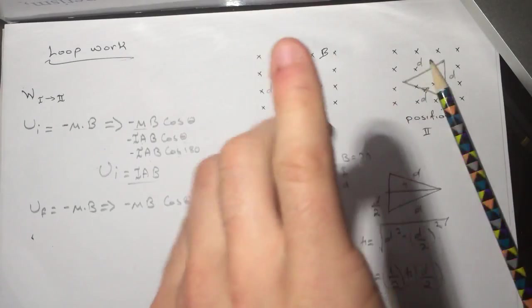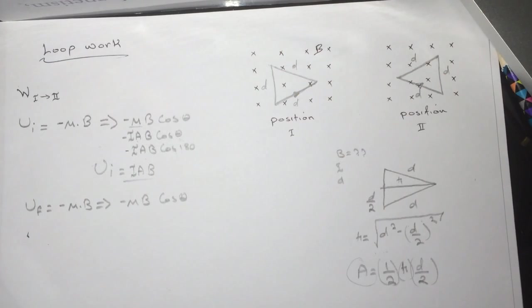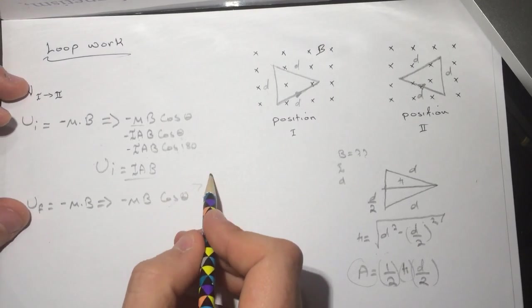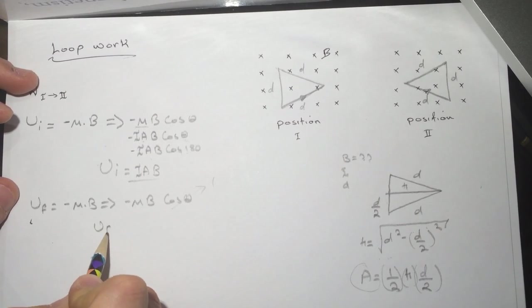The dipole moment is, curl your finger with it, and our thumb is pointing down. It's with the magnetic field, so the angle here is 0. This will turn to 1, so U final will be equal to minus IAB.